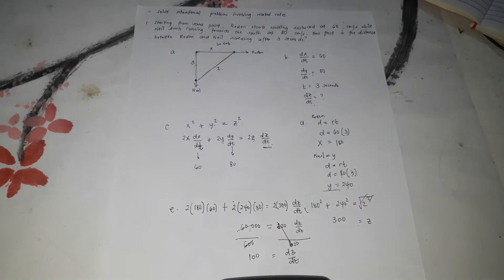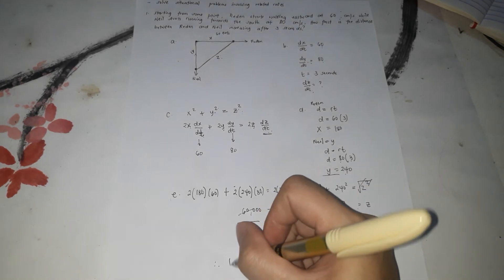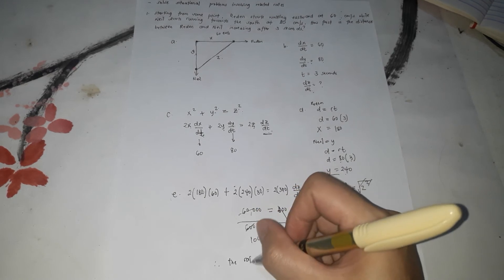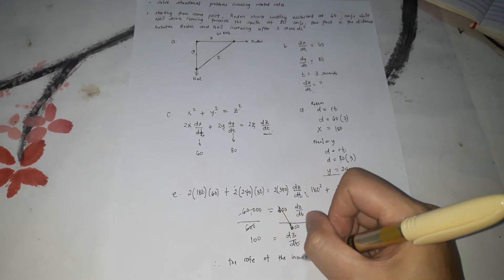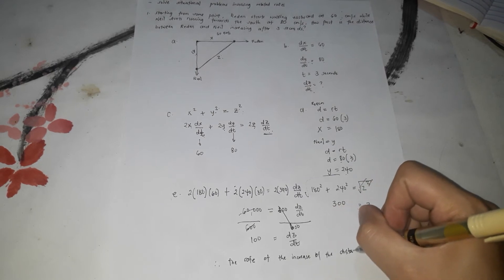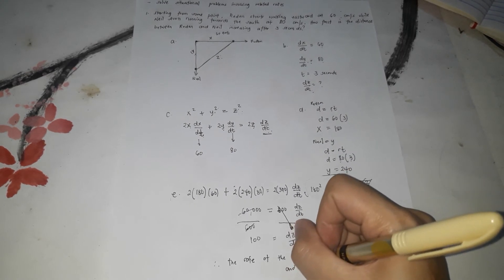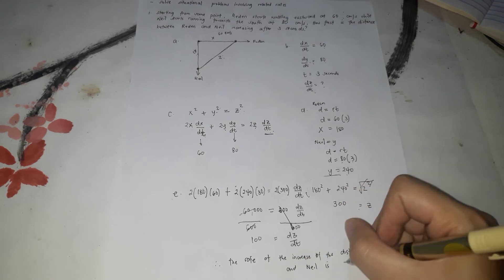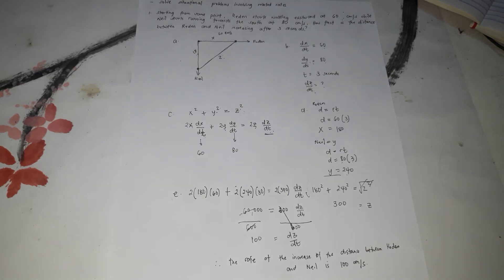Therefore, the rate of increase of the distance between Reden and Nail is 100 cm per second. That's the solution for number one.